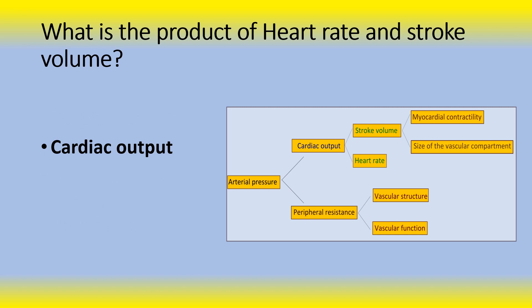Cardiac output is the product of heart rate and stroke volume, and is measured in liters per minute. Stroke volume is the volume of blood ejected from the ventricles with each heartbeat.